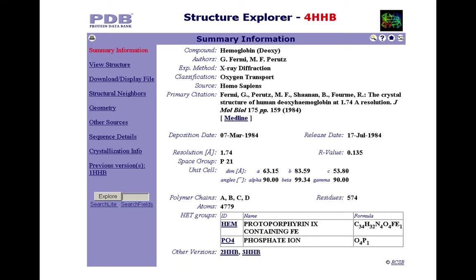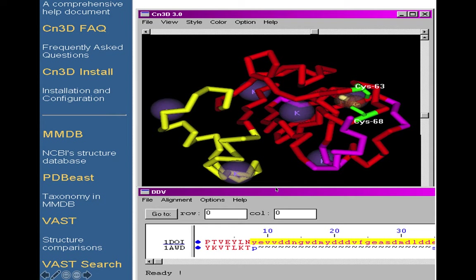For example, when you search for a protein of interest, such as ID 4HHB, clicking on it gives you summary information — this is a hemoglobin compound confirmed by X-ray diffraction. The source is Homo sapiens. There is a deposit date and a release date; typically it takes about four months from deposit to release, during which they check the credibility of the researcher and the work. The rest of the details are important if you want to repeat the process, especially for X-ray diffraction.